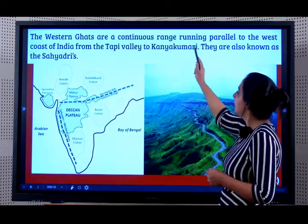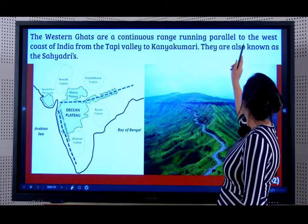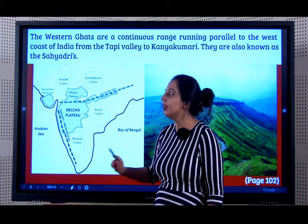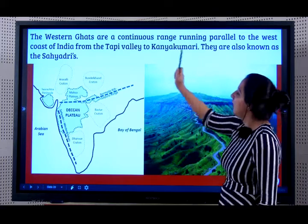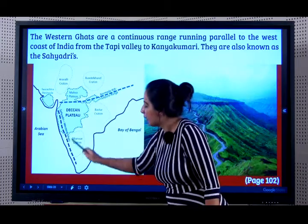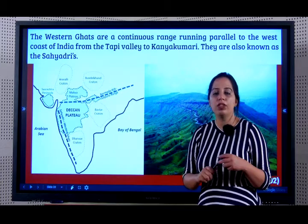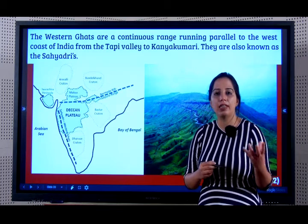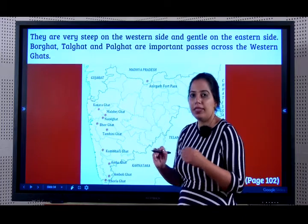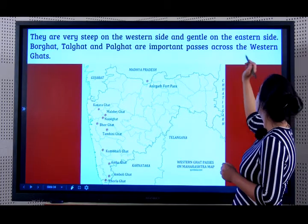The Western Ghats are a continuous range - they are continuous with no break, running parallel to the west coast. They run from the Tapi River Valley to Kanyakumari. They are also known as the Sahyadris - another name very important from the examination point of view. They are very steep on the western side and gentle on the eastern side.